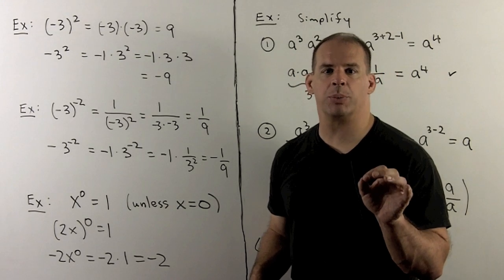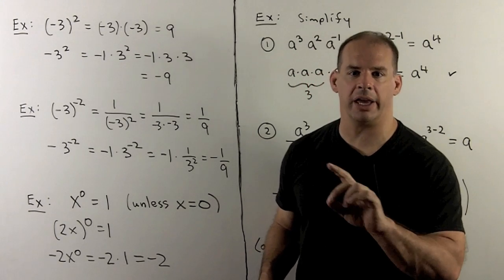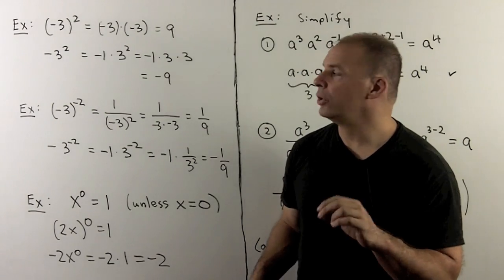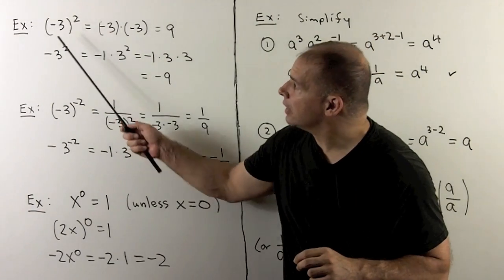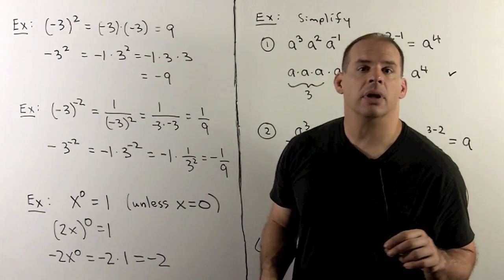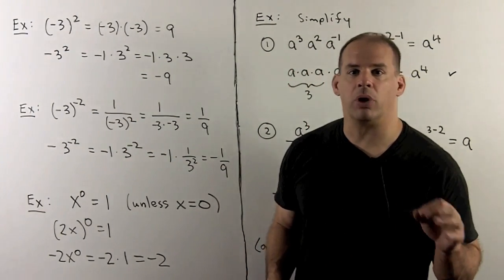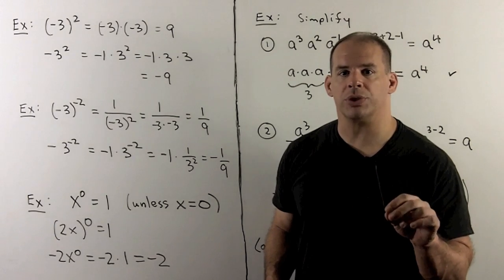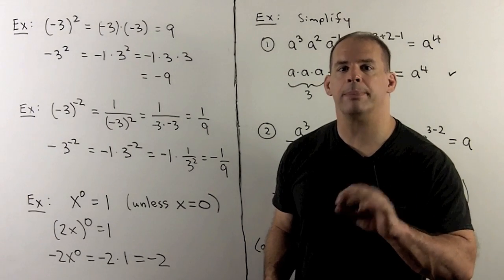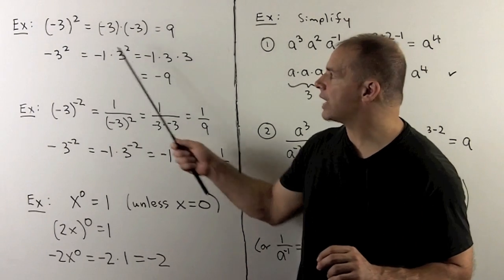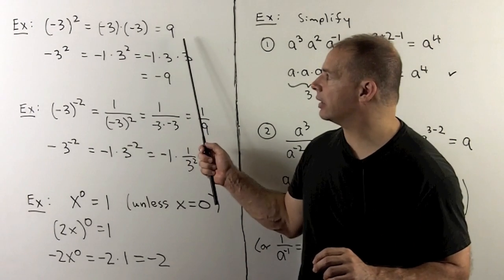Let's work some examples of exponents when we have like bases. First, if I have minus 3 squared and the minus 3 is in parentheses, our rule is straightforward. We just take minus 3 and multiply it by itself. So out comes a 9.